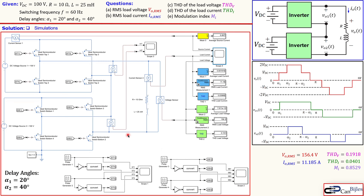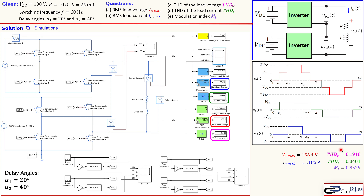Now let's look at the MATLAB Simulink simulations. The circuit shows two full-bridge inverters with their switching elements and pulse generators, the series RL load, and two 100-volt DC voltage sources. The simulation gives RMS load voltage = 156.3 V, RMS load current = 11.18 A, voltage THD = 0.191, and current THD = 0.03989 — all in close agreement with our calculations.